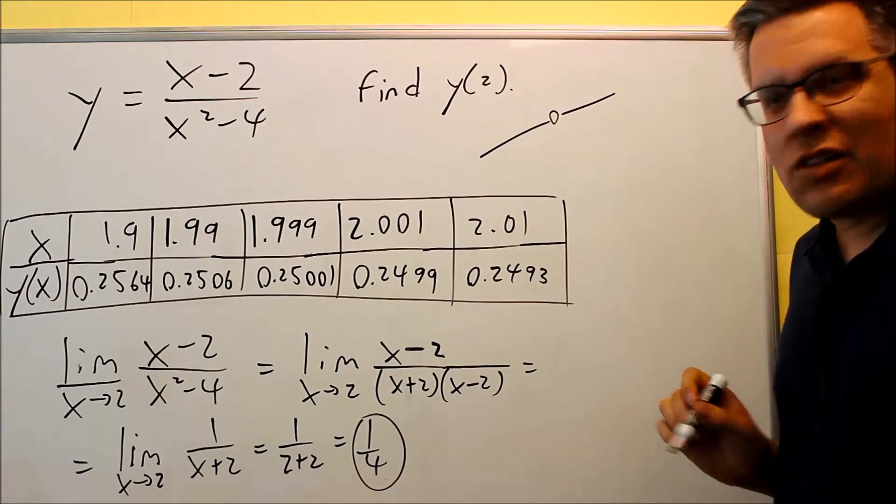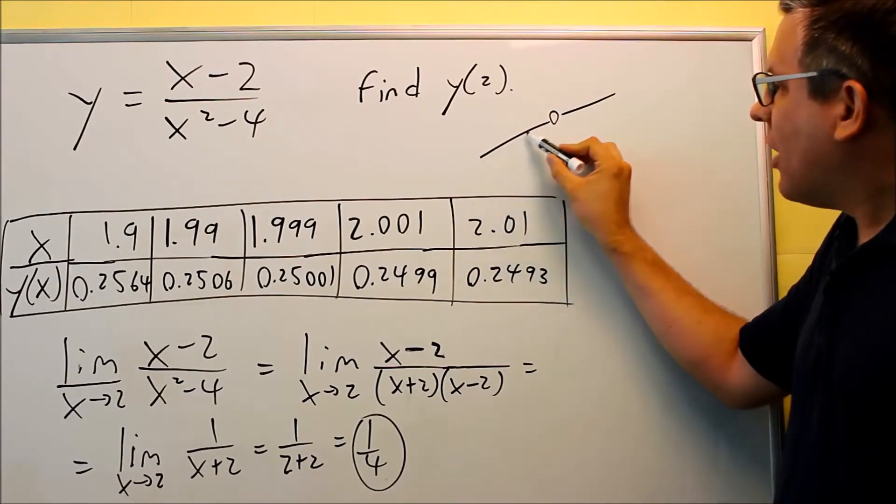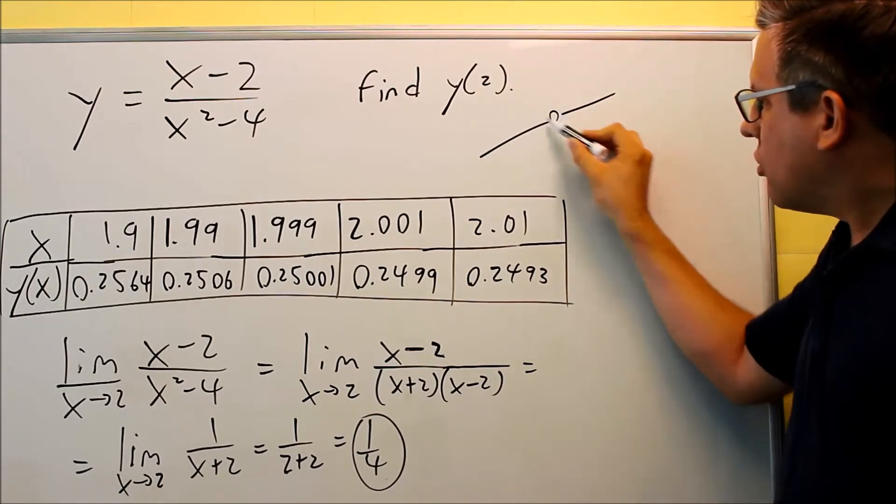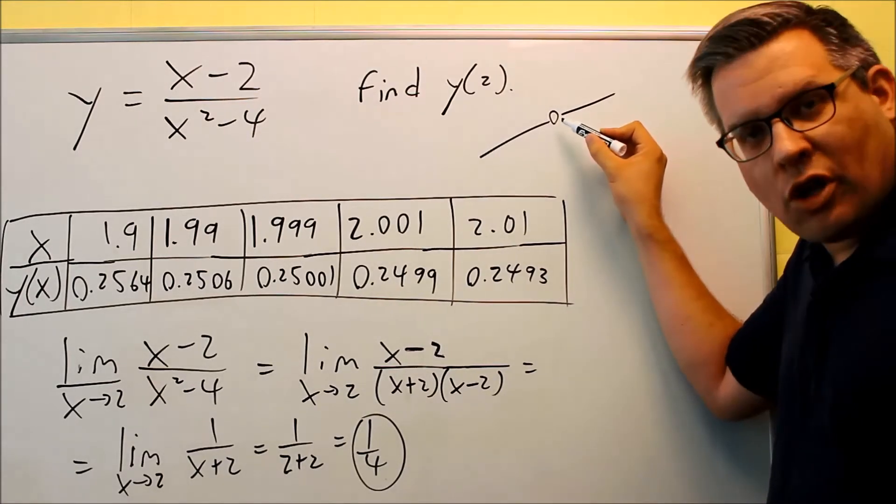So if I have a hole that's going that way, then when you have something like this, you can find the y value from the left-hand side and from the right-hand side, and basically it approaches whatever the y value would have been here if this would have been closed.